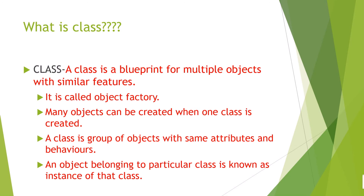We can create many cars from a vehicle class — Audi, BMW, Maruti Suzuki — all created on a similar pattern of the vehicle class. A class is a group of objects with the same attributes; every object must conform to the same functions. An object belonging to a particular class is known as an instance of that class — this is an important point to remember.